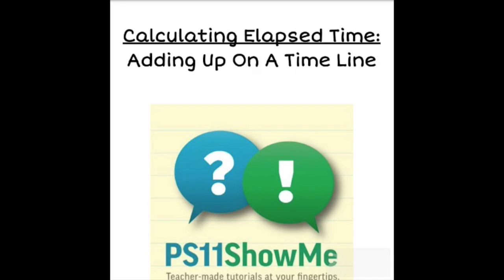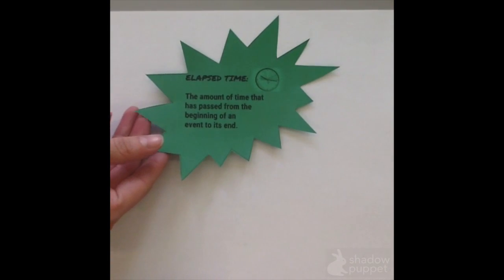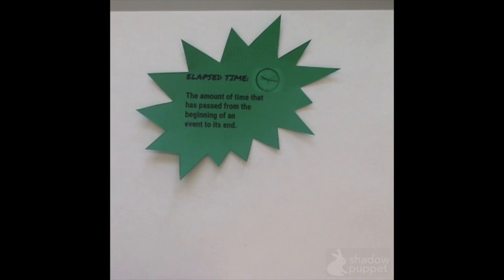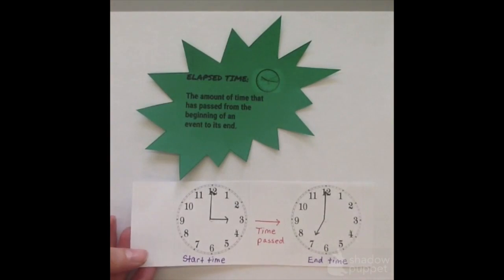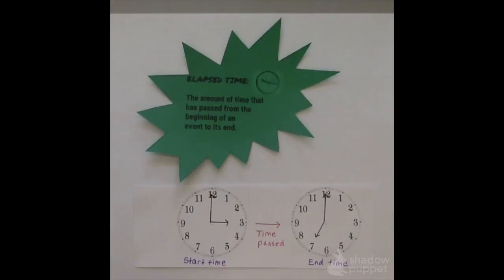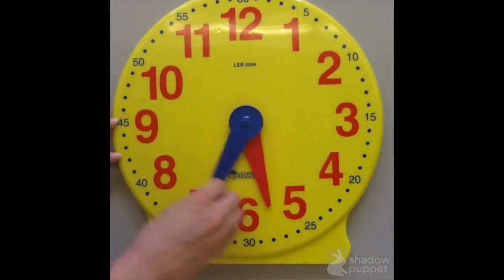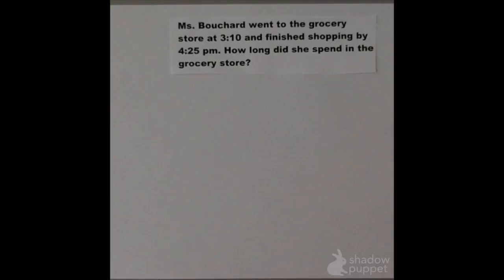Hi, this is Ms. Bouchard, and today I'm going to teach you how to calculate elapsed time by adding up on a timeline. Elapsed time is the amount of time that has passed from the beginning of an event to its end. If we know the starting and ending times, we can calculate the elapsed time between these events. Today I'm going to show you how to calculate elapsed time by adding up on an open timeline.